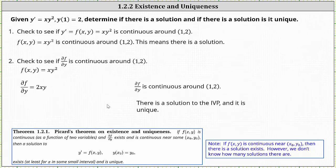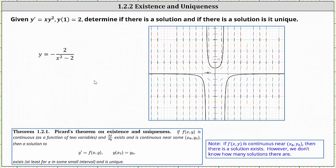Looking at the slope field for y prime equals x times y squared, there is only one function that fits nicely and passes through the point one comma two. This can be found using separation of variables, giving y equals negative two divided by the quantity x squared minus two. I hope you found this helpful.